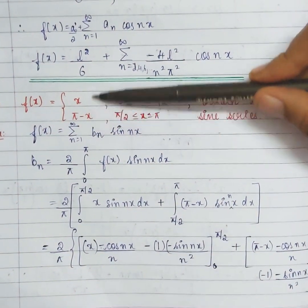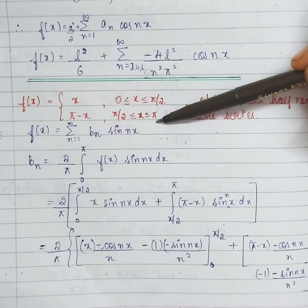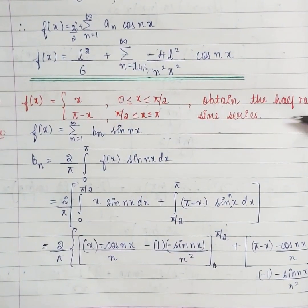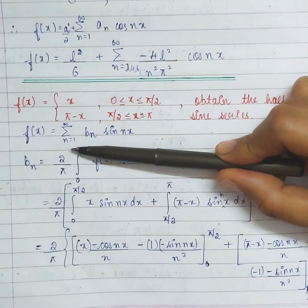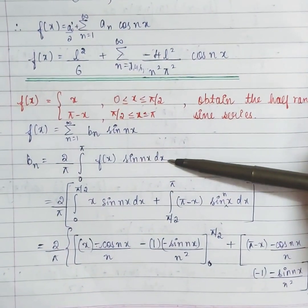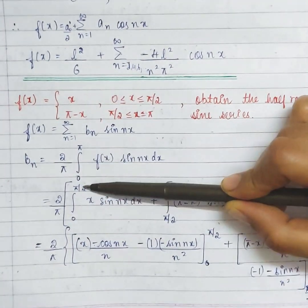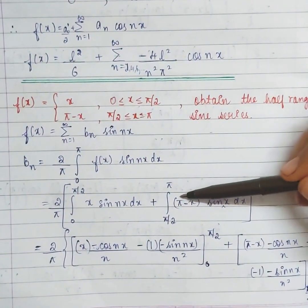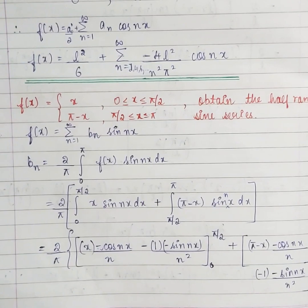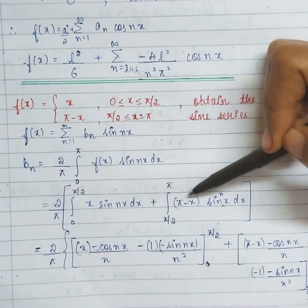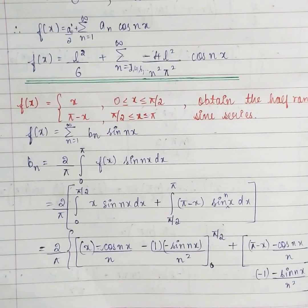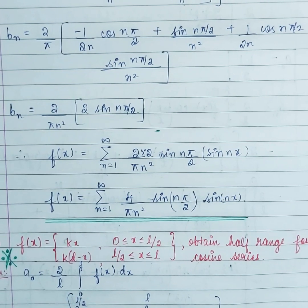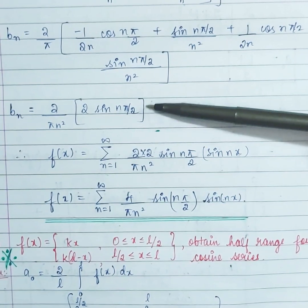The next example has a discontinuous function in 0 to π: from 0 to π/2, f(x) = x; from π/2 to π, f(x) = π - x. Obtain half range sine series — so we find only BN. BN = 2/π · integral from 0 to π of f(x)·sin(nx) dx. We split: from 0 to π/2 it is x·sin(nx) dx, plus from π/2 to π it is (π - x)·sin(nx) dx. Applying Bernoulli's to both and substituting limits gives BN = 2/(πn²)·sin(nπ/2).